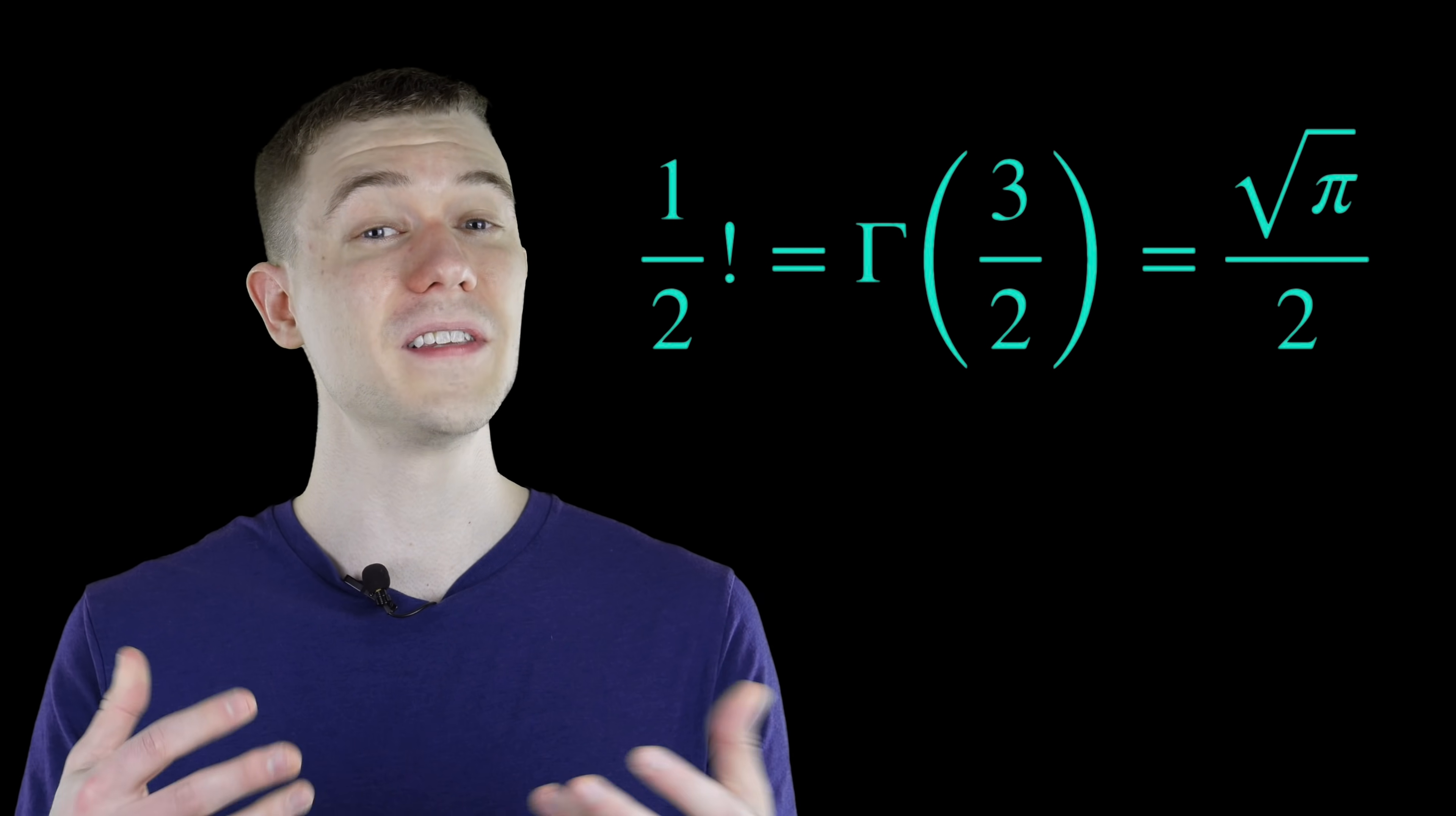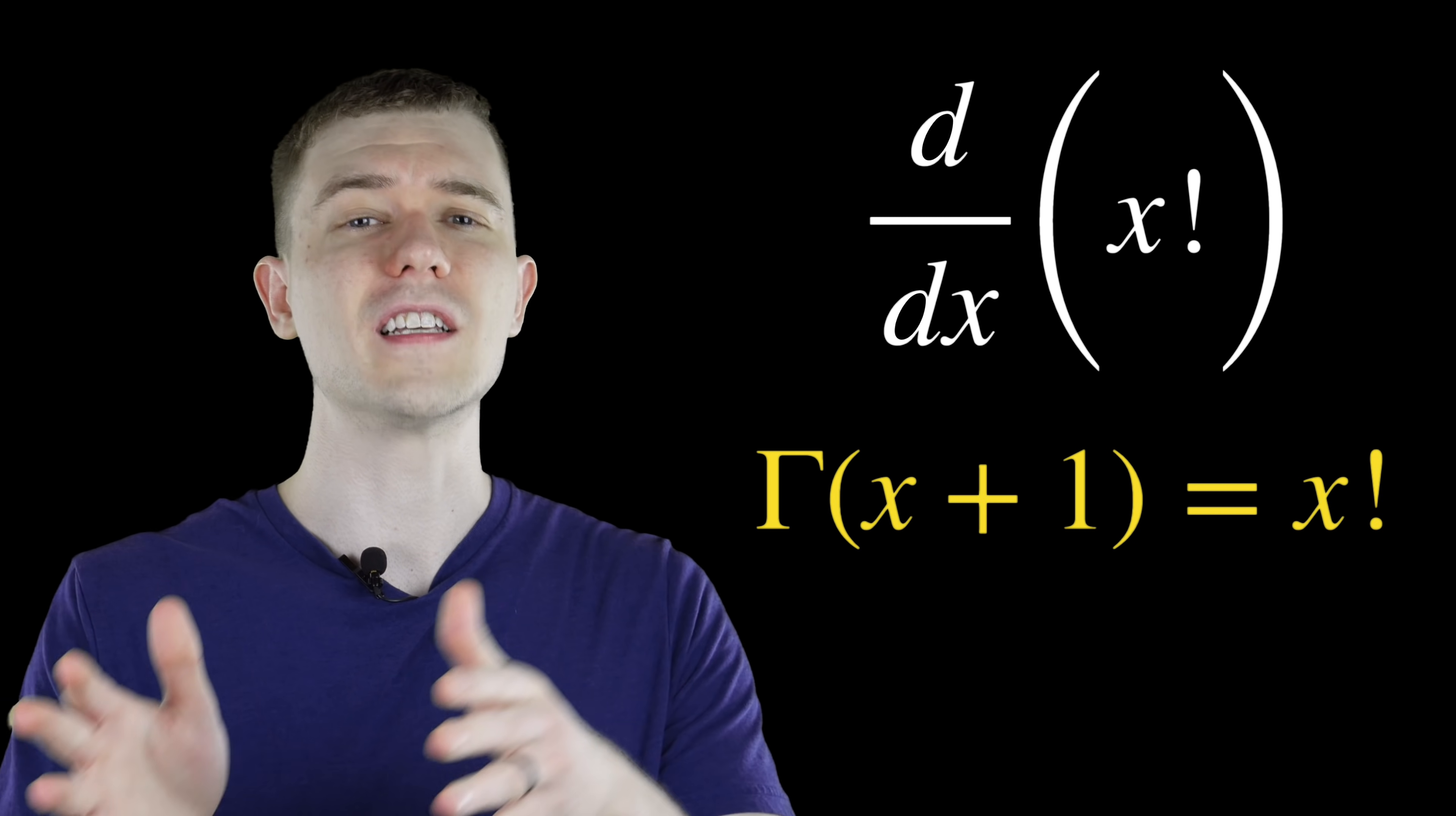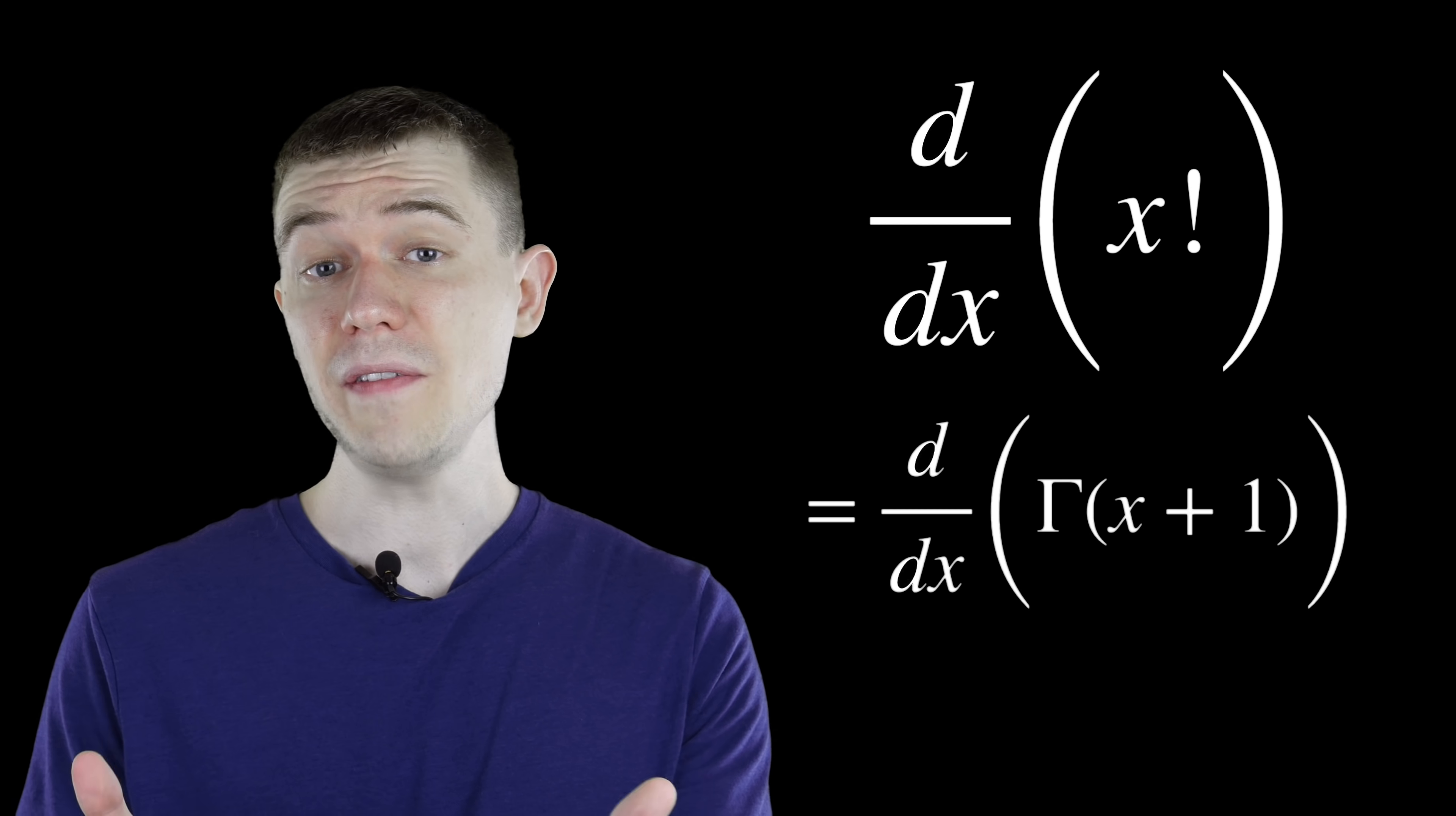Now this is great for a lot of things, including taking factorials of non-integer values. But we can actually answer our original question, which was, how do we take the derivative of a factorial? Let's just take the derivative of the gamma function. Just to make it come out a little bit nicer, let's do gamma of x plus 1 rather than gamma of x, because we know gamma of x plus 1 is x factorial.